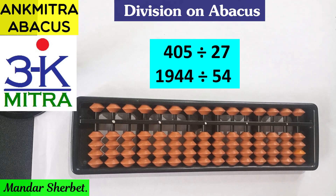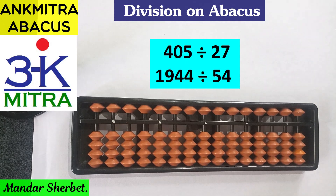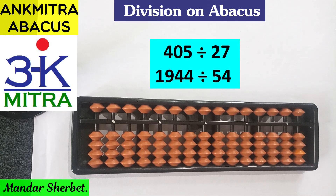Hello everyone. In this video I will be demonstrating two division sums requested by one of the subscribers. The first sum is a three-digit number divided by a two-digit divisor, and the second one is a four-digit number divided by a two-digit divisor. Let's start with the first sum.